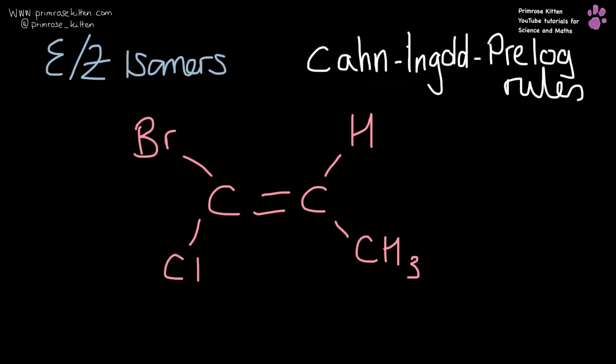Now, the way we work out whether it's an E or a Z isomer are based on Cahn-Ingold-Prelog rules. And what you need to do is to work out the priority of everything coming off the carbon.